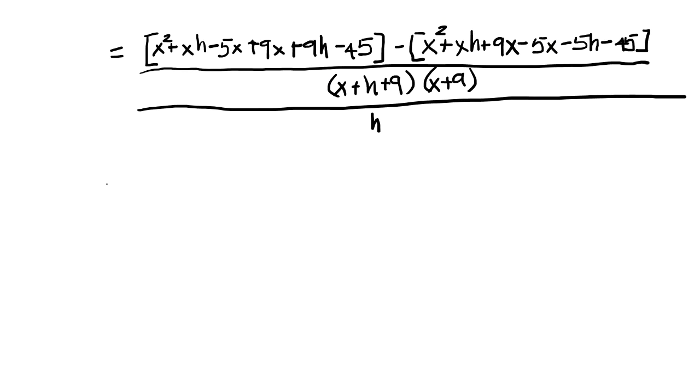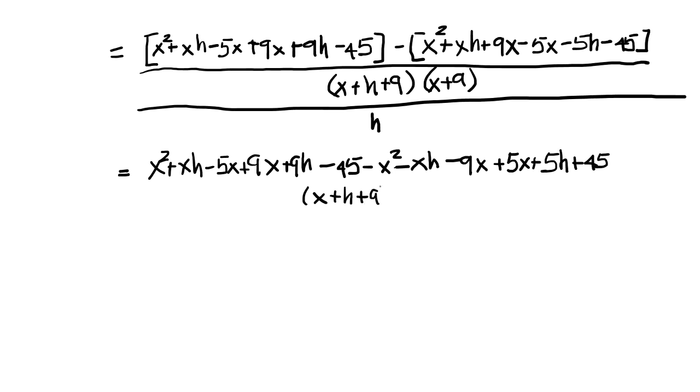Now let's simplify this. You can see these square brackets are very important here so I don't get the sign wrong. So x squared plus xh minus 5x plus 9x plus 9h minus 45. And now I have minus x squared minus xh minus 9x plus 5x, because it's a minus minus, plus 5h and plus 45 over my common denominator, which is x plus h plus 9 multiplied by x plus 9. And it's all going to be over h.